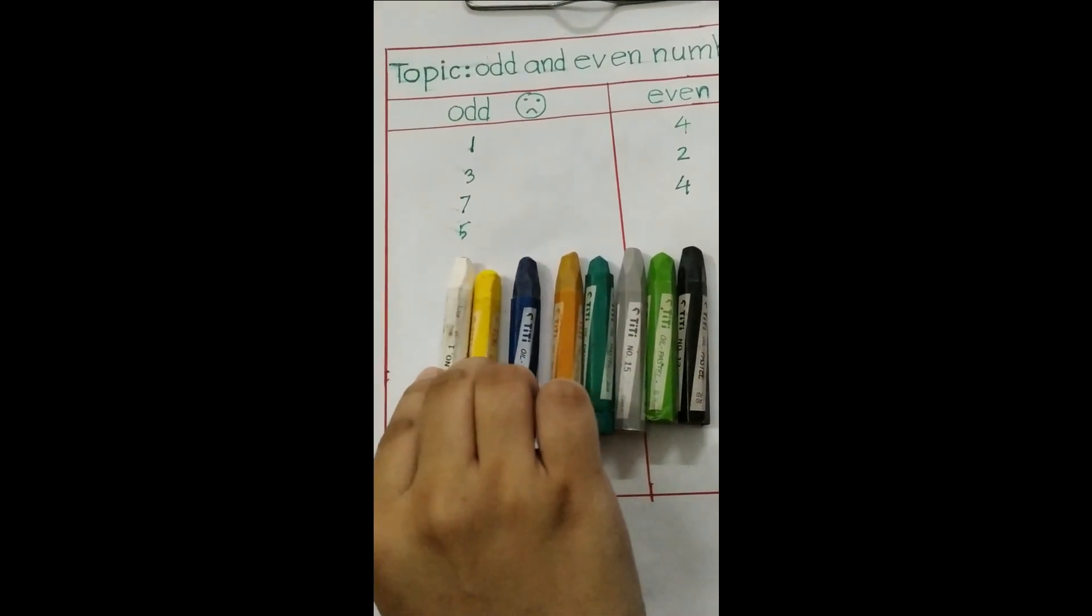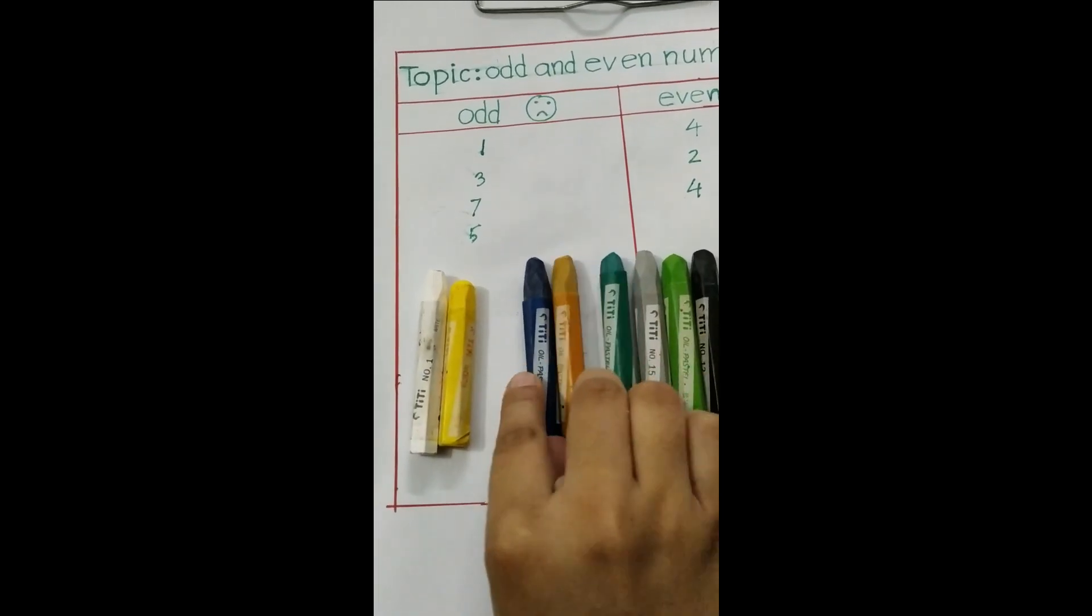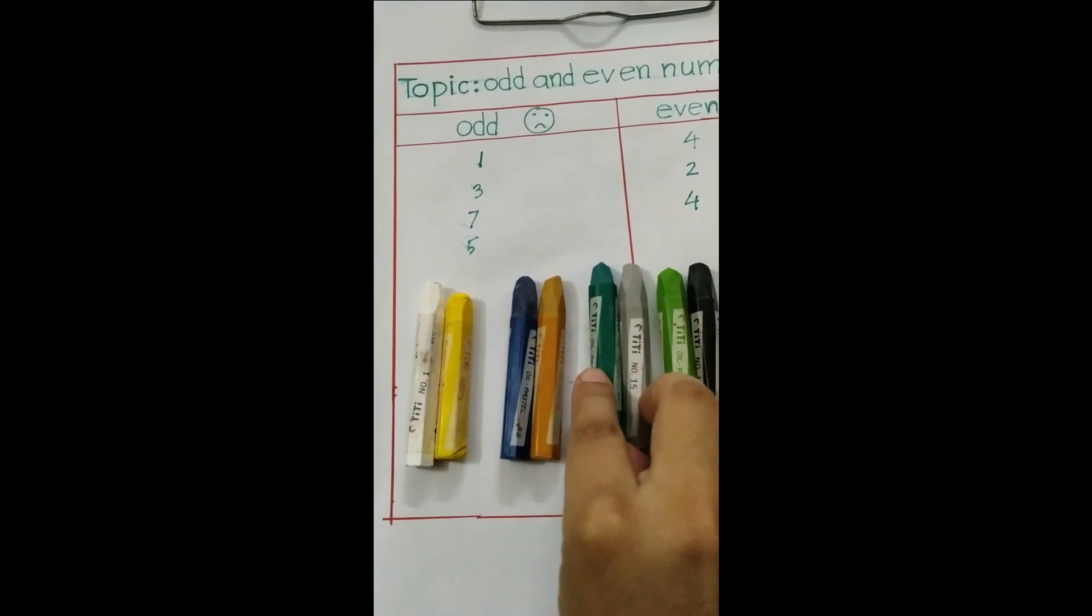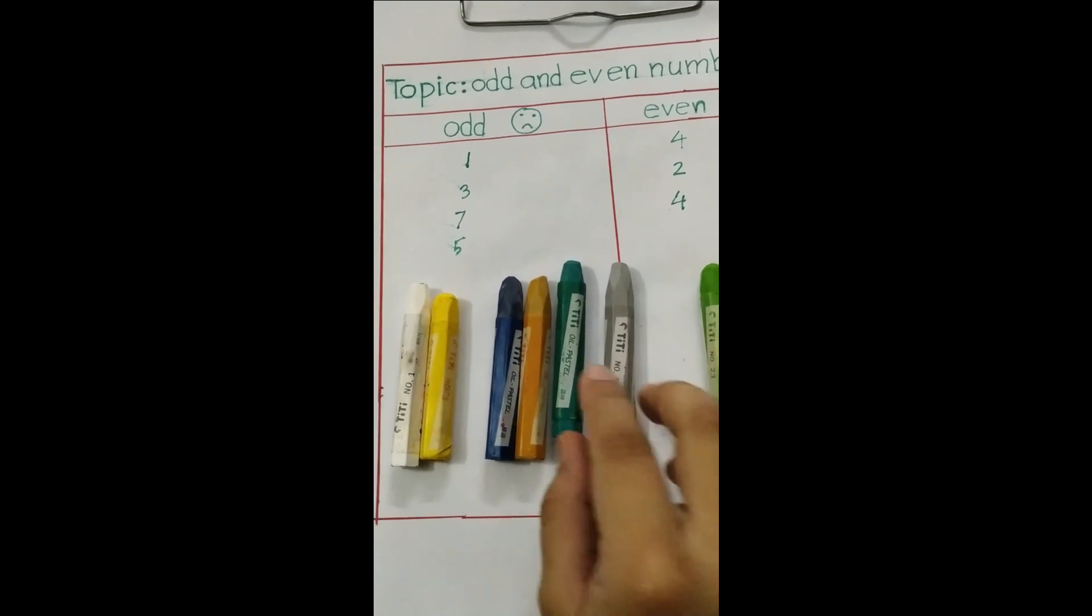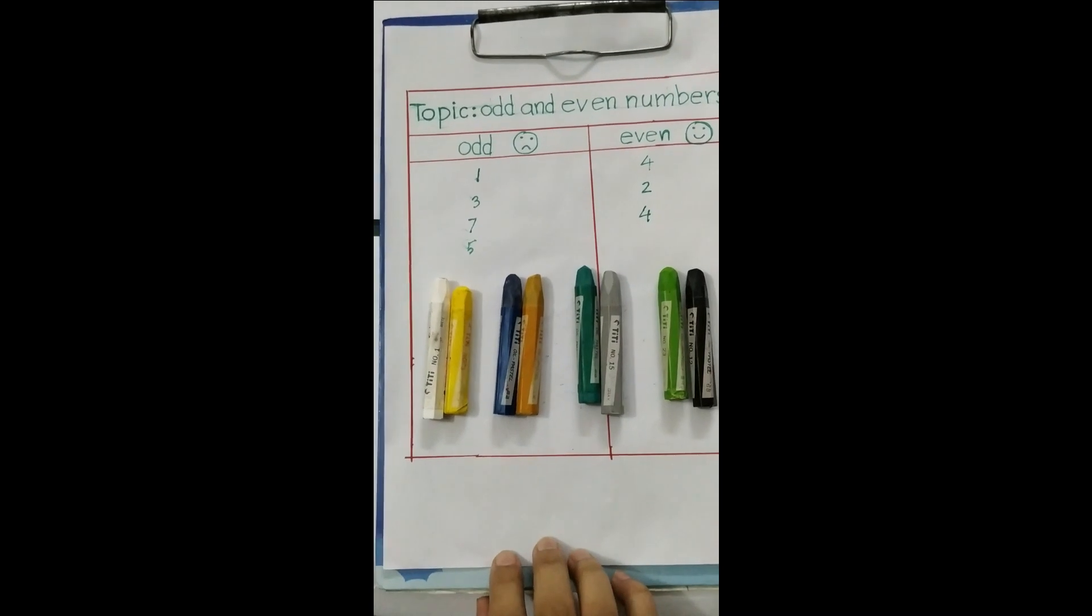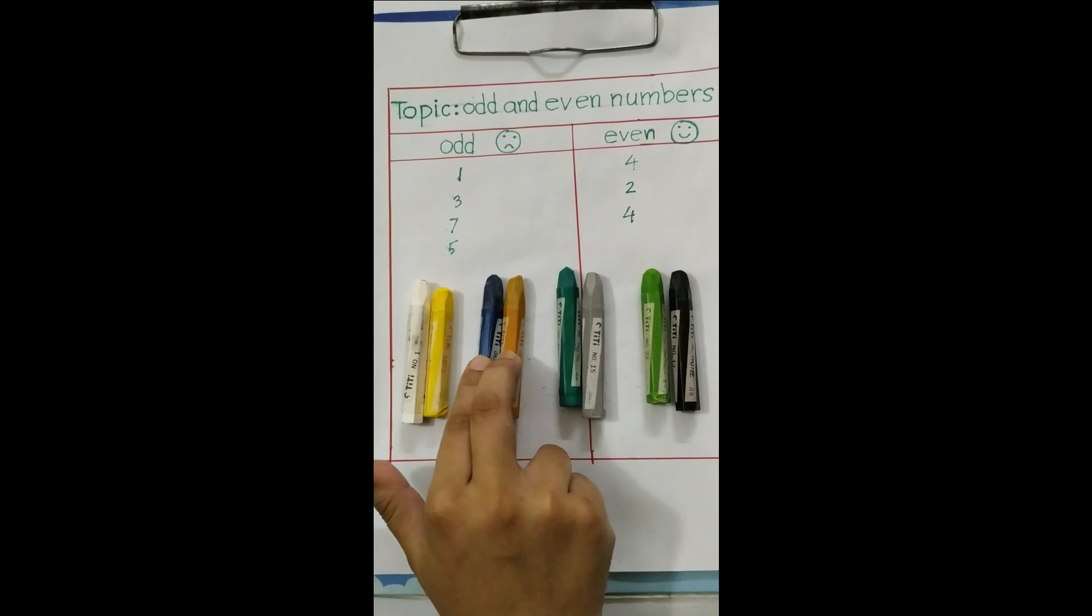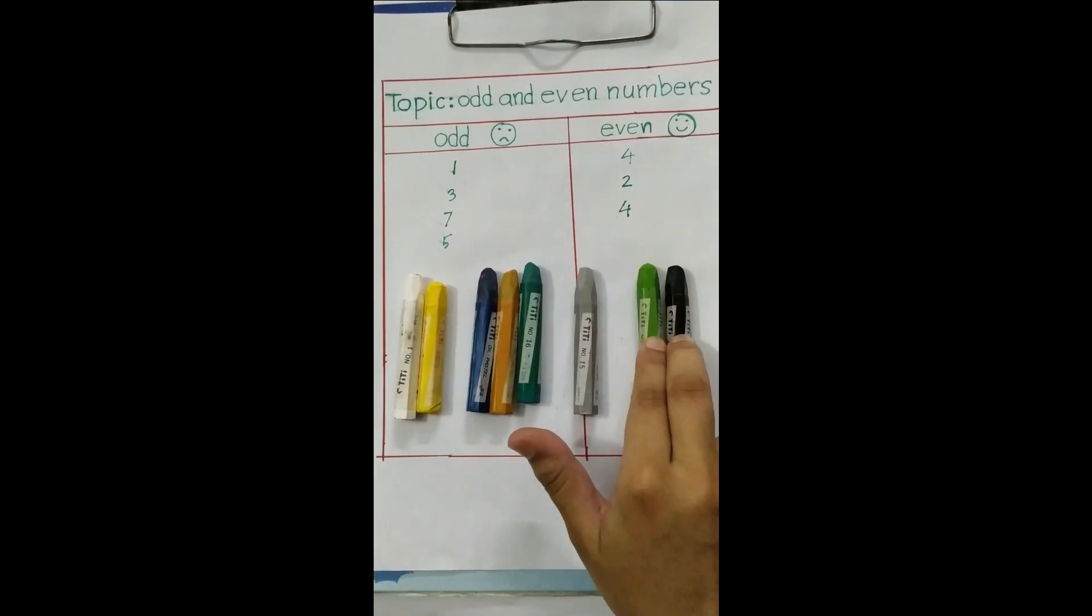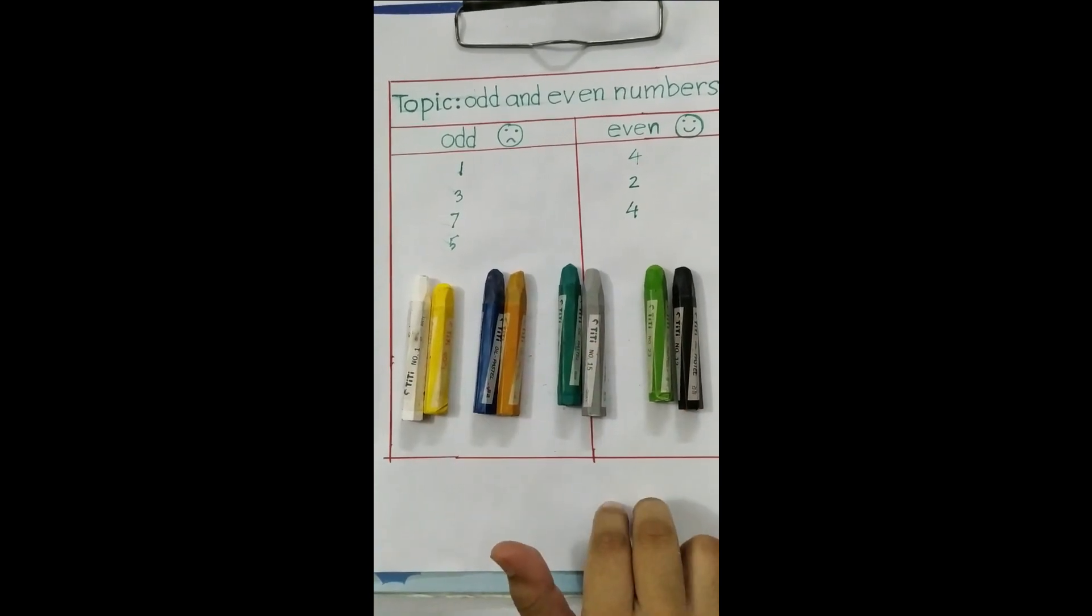These two colors form a pair. These two colors form another pair. These two colors form another pair, and these two colors form another pair. So that means two colors in a pair, two colors in a pair, two colors in a pair, and two colors in a pair. That means it's even.